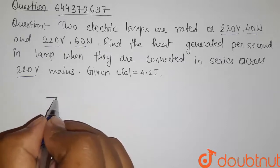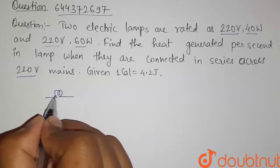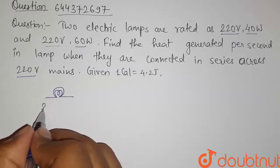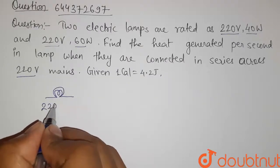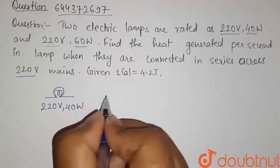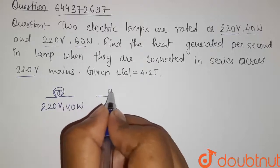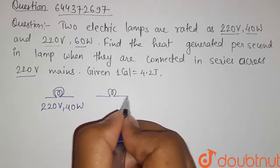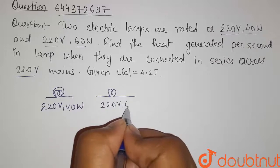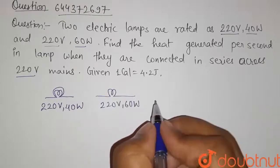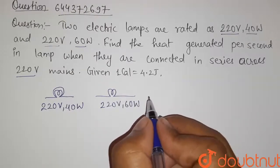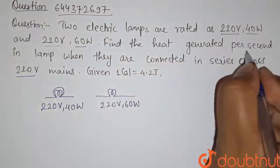We have two lamps. The first lamp has a rating of 220 volt and 40 watt, and the second lamp has a rating of 220 volt and 60 watt. We have to find the heat generated per second when they are connected in series.